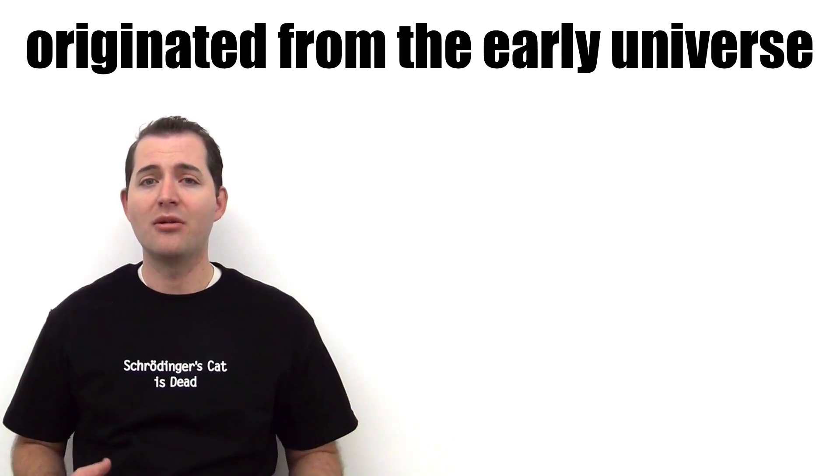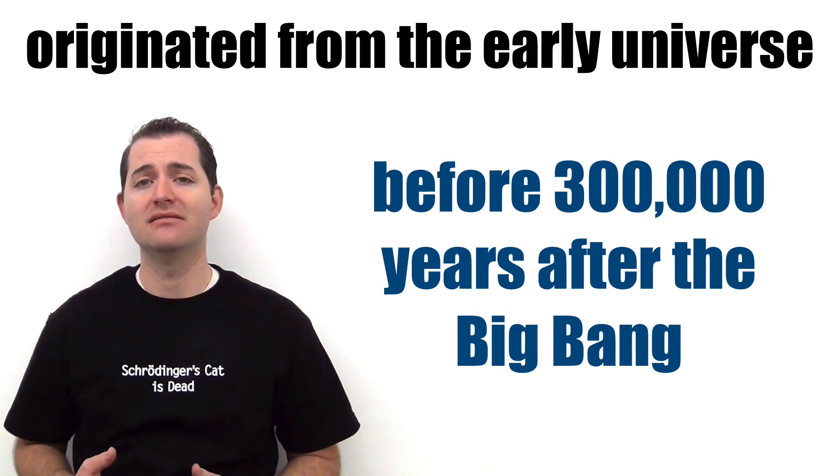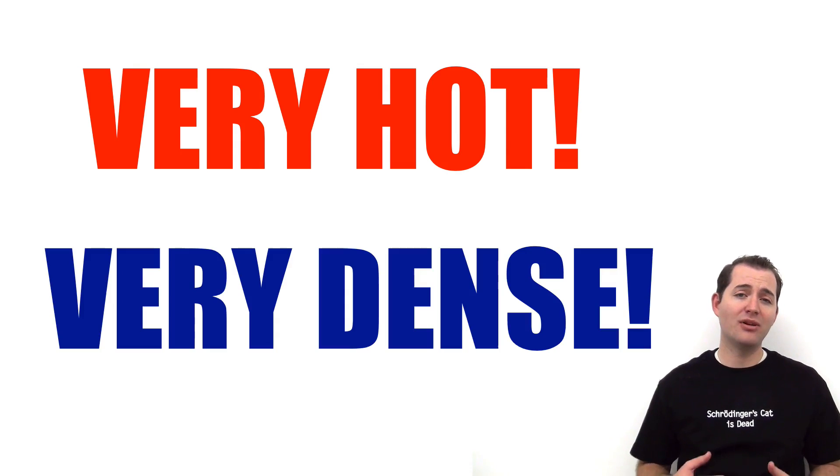The Cosmic Microwave Background Radiation originated from the early universe prior to about 300,000 years after the Big Bang. At this time the universe was much hotter and much more dense than it is today and it was filled with a uniform glow caused by the hydrogen plasma that was present.